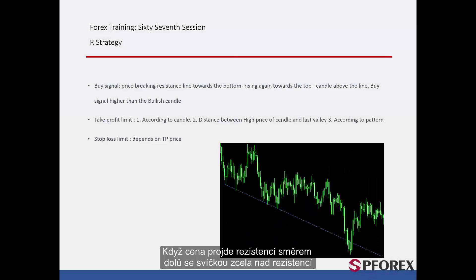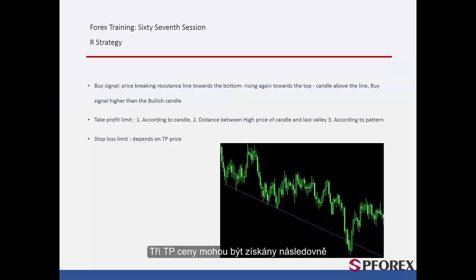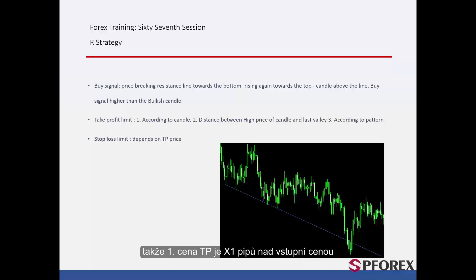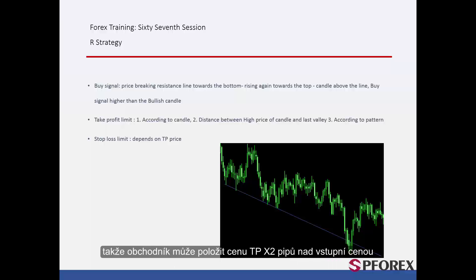Buy signal: When price passes the resistance line towards the bottom with complete candles over the resistance line and then returns to the given resistance line — if price crosses the resistance line towards the top and the close price of a candle forms above this line, then a buy signal is generated after price goes higher than the high price of that candle. The first TP price can be X1 pips higher than the entry price, where X1 equals the length of the bullish candle that forms above the resistance line. The distance between the high price of the given candle and the low price of the candle on the last valley equals X2; a trader can consider TP price X2 pips higher than the entry price.